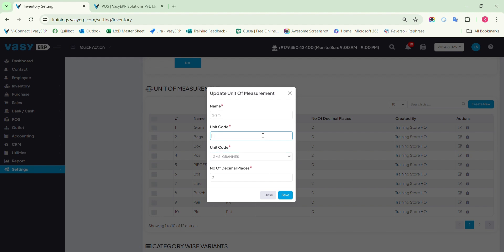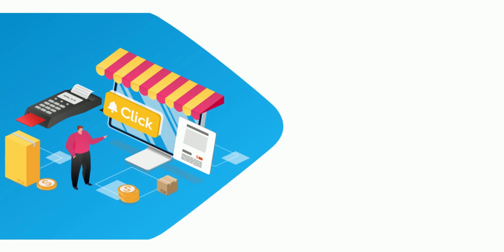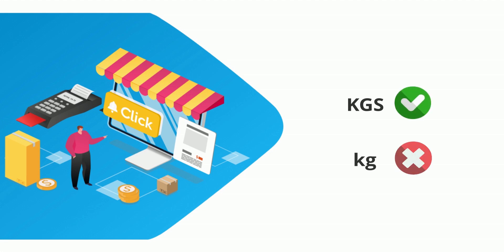In such a case, duplicate units will be uploaded on a first-line basis. For example, if there are two units with the same name, the first unit will be uploaded with the mentioned details and the second will be rejected automatically.